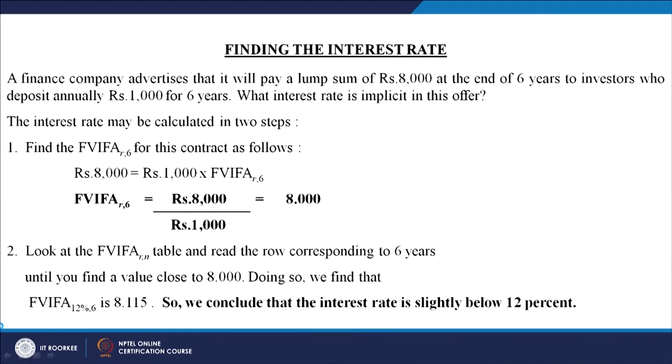For example, a finance company advertises that it will pay a lump sum of 8000 rupees at the end of 6 years to investors who deposit annually 1000 rupees for 6 years. So in total over 6 years the investor pays 6000 rupees, and the company returns 8000 rupees at the end of 6 years.